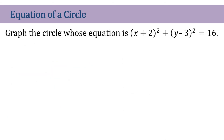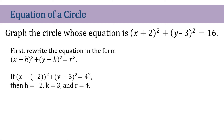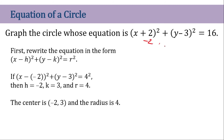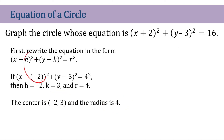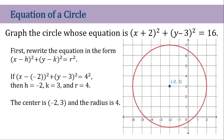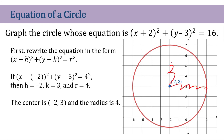Now let's graph the circle. To graph a circle, we just need to find the center and the radius. In this case, the center is going to be (-2, 3) and the radius is 4. So let's mark the center, then count 4 units in all directions — 1, 2, 3, 4 — and draw the circle. That's how we graph this.